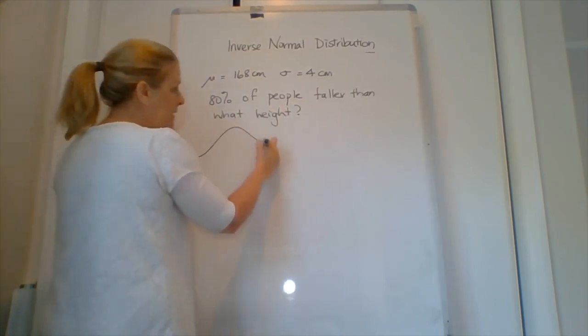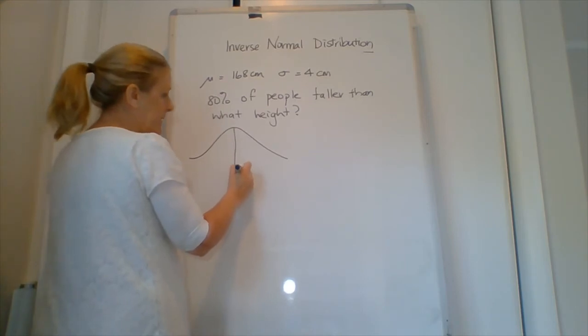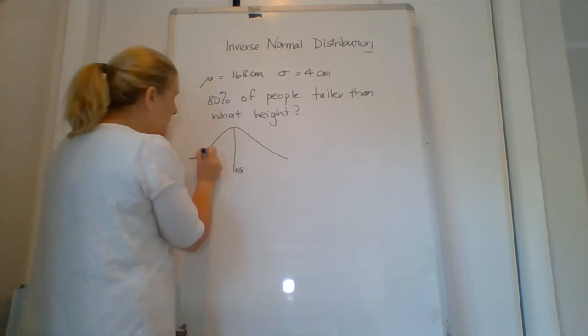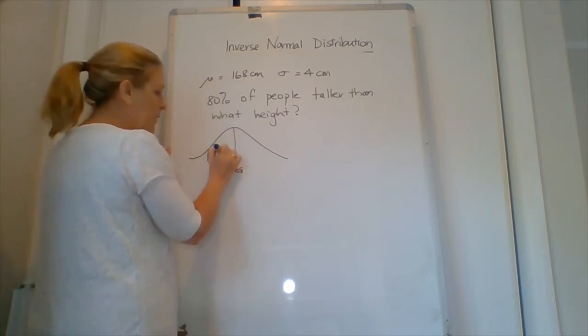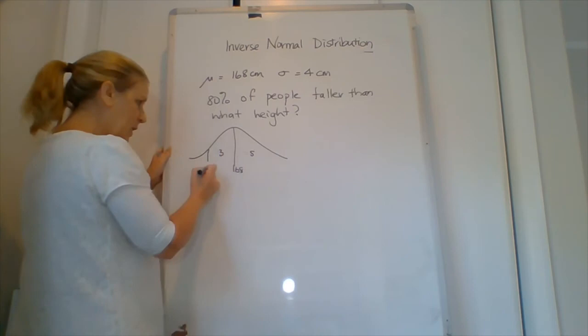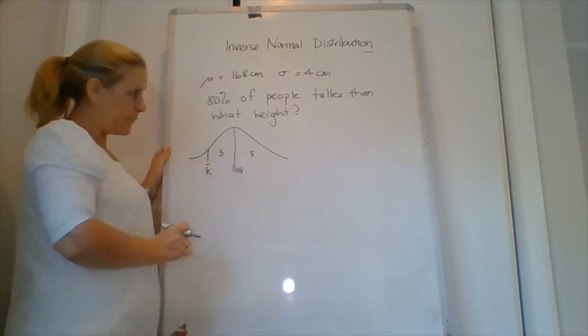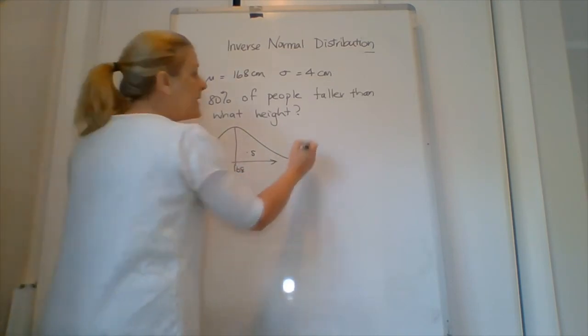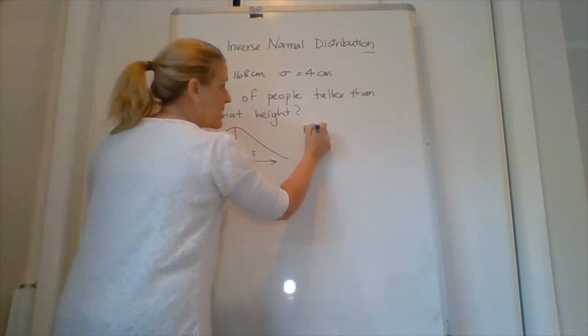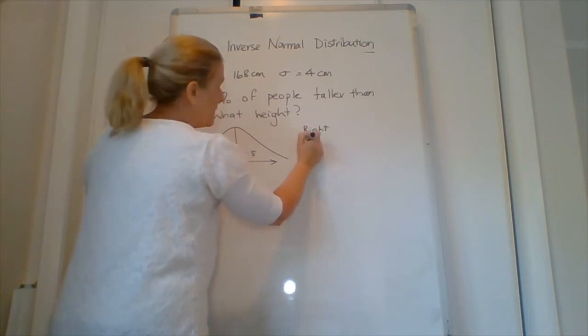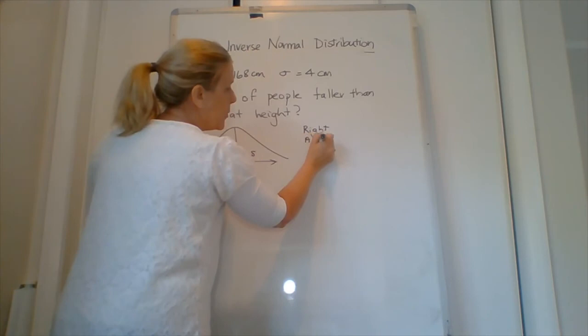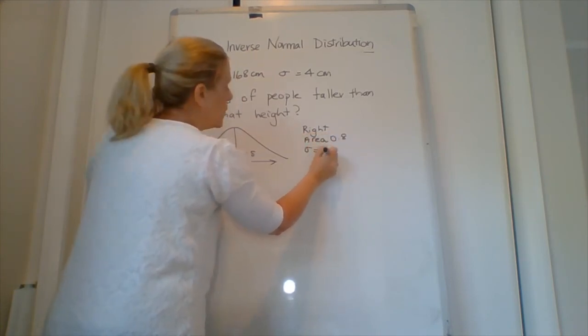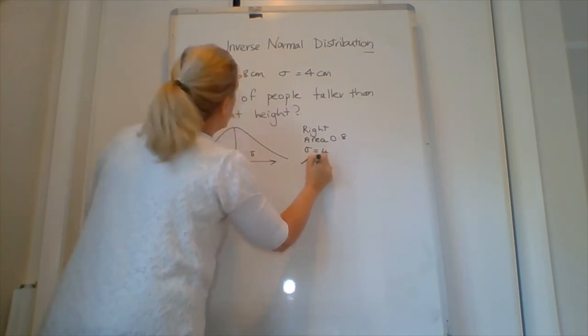So here's our picture. 168. 50% over here, 0.5. 30% this way. So we've got 0.3 and 0.5 makes 0.8. We want to find k. This height here. So this time, it's a right-hand tail. So when we put in our calculator, we need to put right. We need to put the area is 0.8. The standard deviation is 4. The mean is 168.